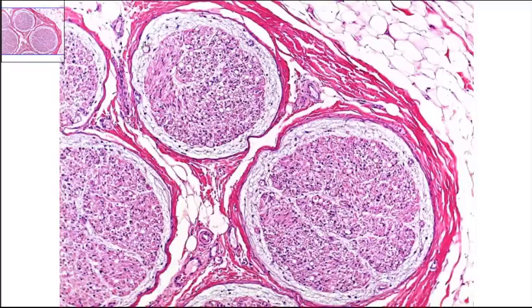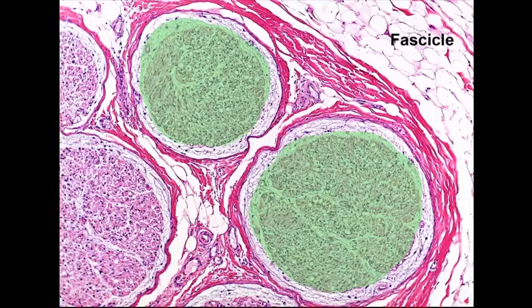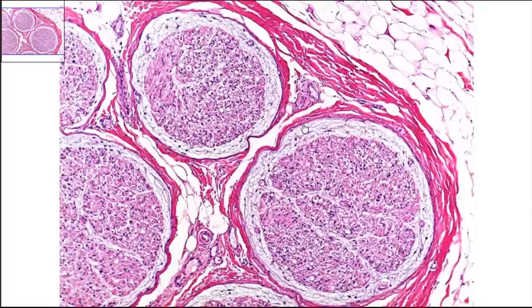We can see one fascicle right here and a second fascicle right here. Now each fascicle has its own individual covering of connective tissue. The individual covering of a fascicle is called the perineurium.